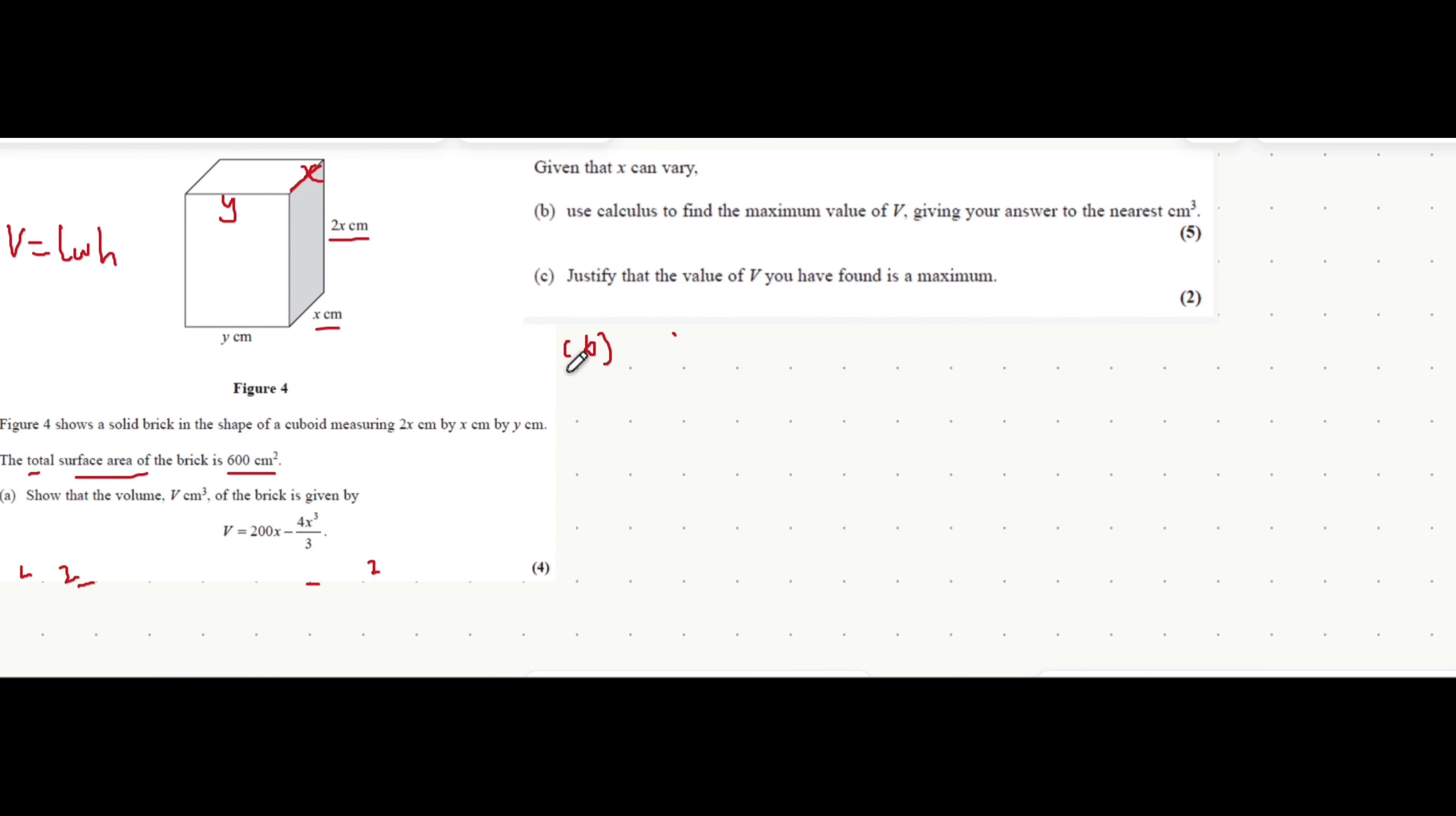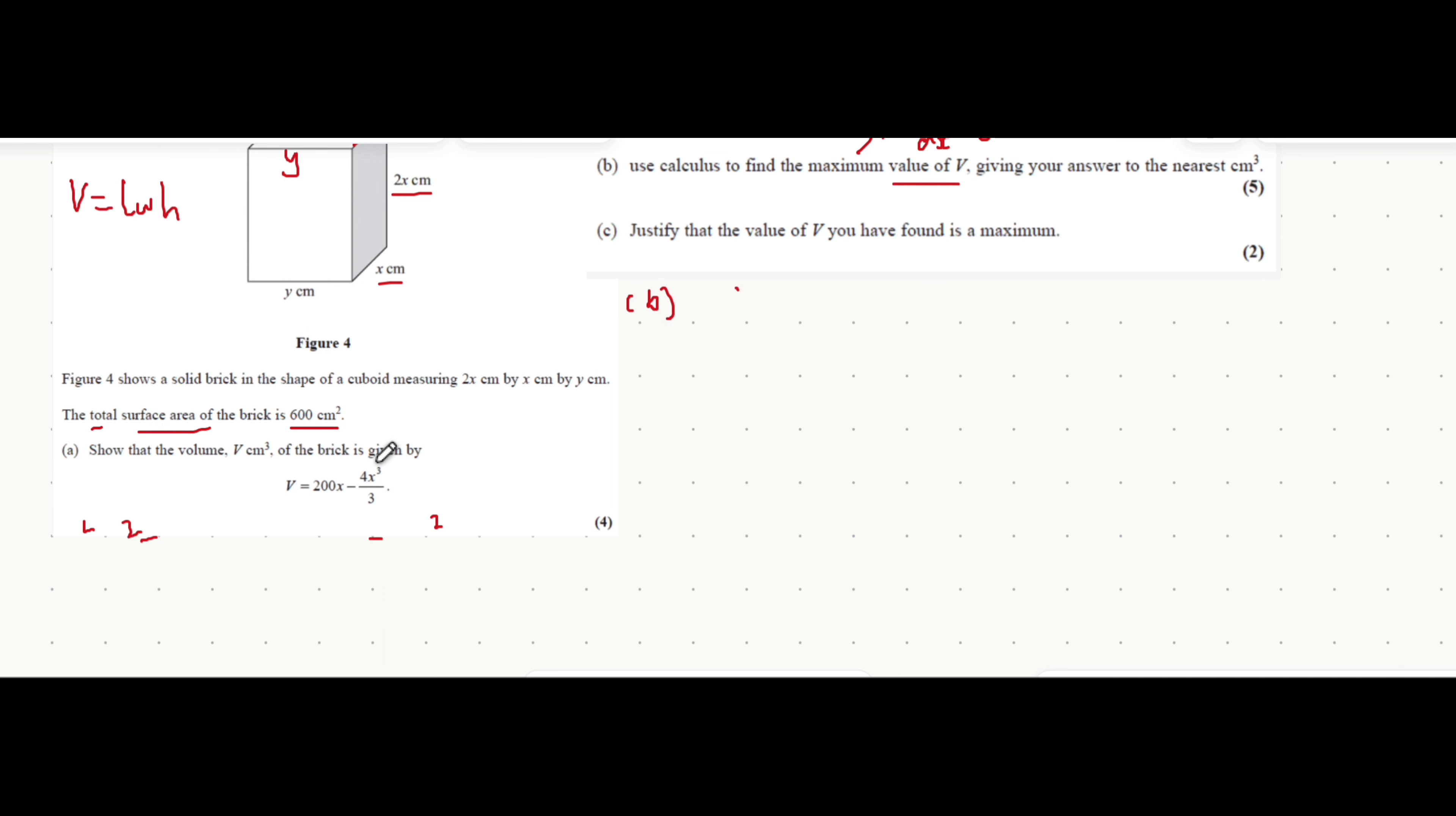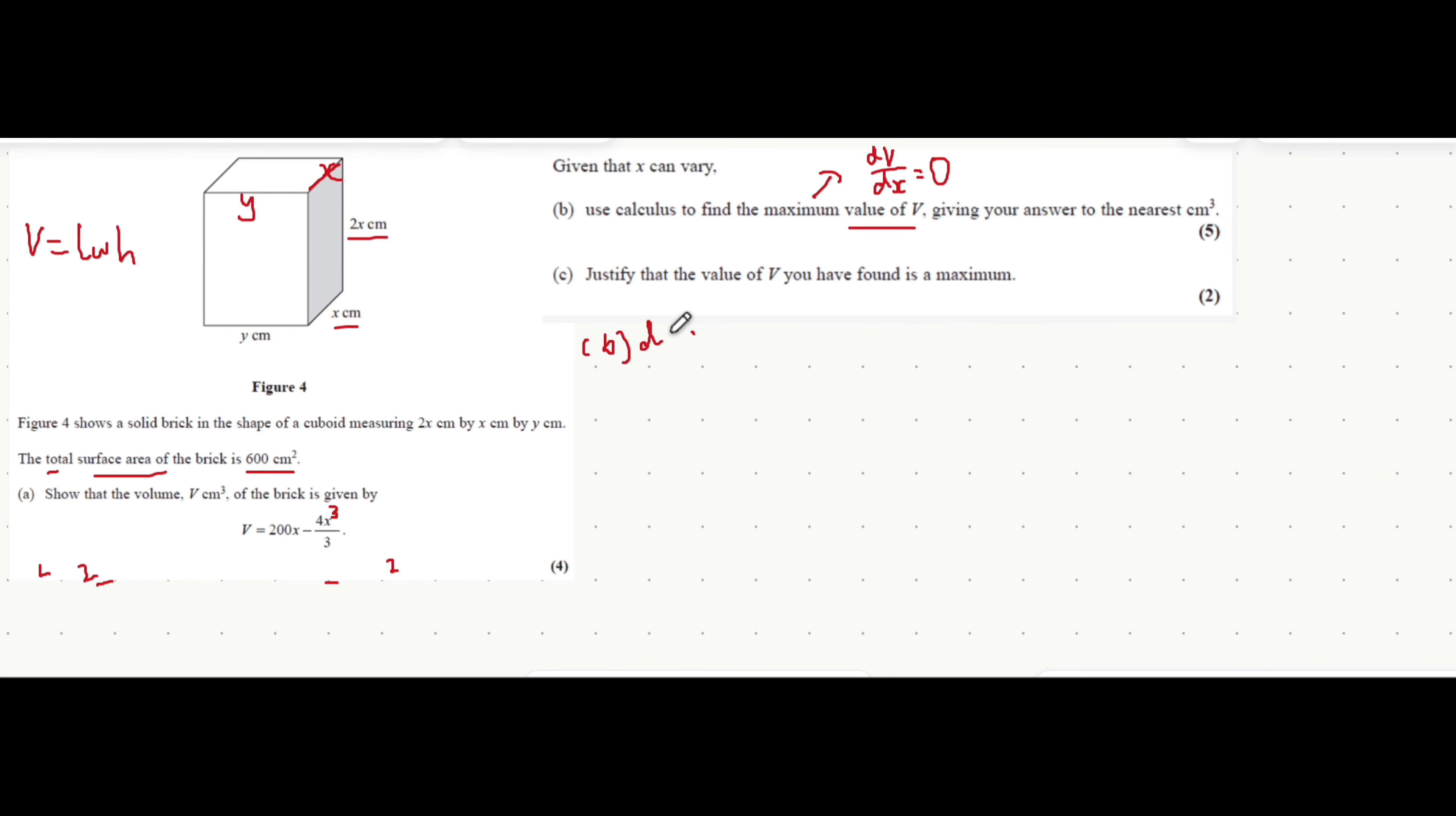Part b is asking us to use calculus to find the maximum value of v. What do we know about a maximum point? We know that the first differential, which is when you differentiate v with respect to x, is equal to 0. Let's first put this, actually this is already in a format where you can differentiate it. This is supposed to be a 3 by the way, in case you can't see it.